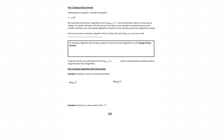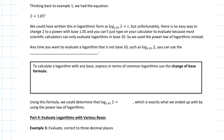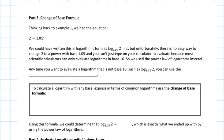Thinking back to example 1, we had 2 equals 1.05 to the power of t. We could write this in logarithmic form as log base 1.05 of 2 equals t. But there's no way to change 2 to a power with a base of 1.05. So you cannot just type this into your calculator to evaluate, because most scientific calculators can only evaluate logarithms in base 10. That's why we need the power law of logarithm instead.